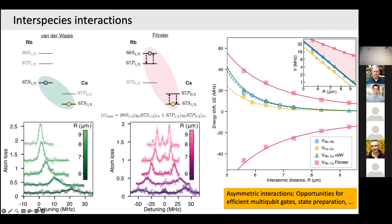Question about why the spectroscopy isn't symmetric about the detuning: at exact Förster resonance it should be symmetric — there's a technical detail there. It's not easy to directly excite to the doubly-excited Rydberg state. In our dual-species approach, we first do a pi pulse on one species and then perform spectroscopy on the other, measuring the shift on that species — this makes the spectroscopy much easier than directly trying to reach the doubly-excited state.